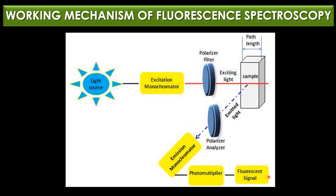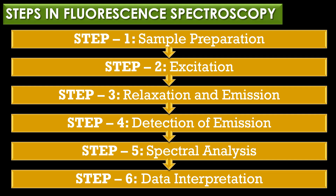Finally, the fluorescence signal — the intensity of the fluorescence emitted by the sample — is recorded and analyzed to derive information about the sample's properties. There are six steps in fluorescence spectroscopy; the first step is sample preparation.